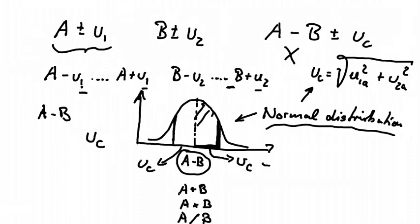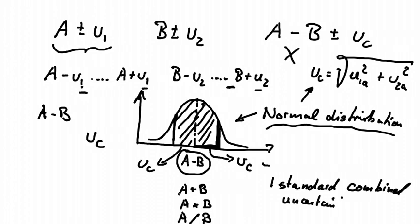So the area under this curve here. This would be the one standard combined uncertainty range. And this bit here is our combined uncertainty, combined standard uncertainty.